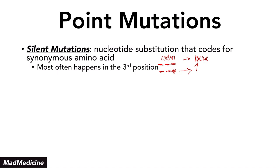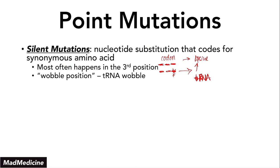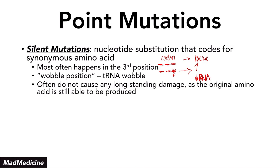Most often this is going to happen in the third position, called the wobble position. The wobble position is actually in the context of the tRNA — the third position in the tRNA structure is what the wobble position refers to. We often call the third position on the codon the wobble position, but it's actually the tRNA wobble. What we're saying is that when you adjust this third position, you will often still get the final intended amino acid.